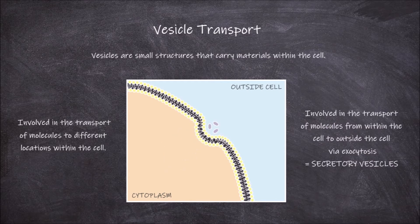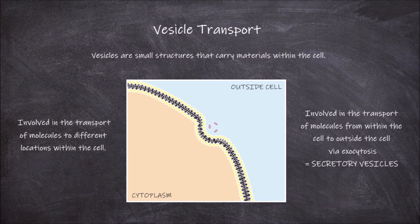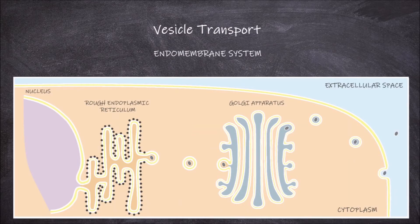These types of vesicles are known as secretory vesicles. An example of vesicle transport in cells is seen between the organelles of the endomembrane system. The organelles of the endomembrane system work together to synthesize, sort, and transport lipids and proteins within the cell.